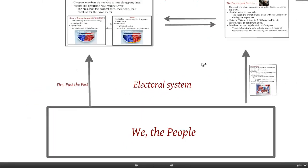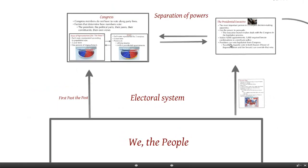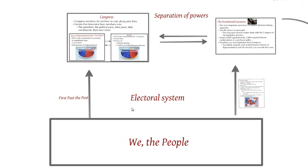Moving on to the electoral system and the relationship between Congress and the President: the people vote directly for the House of Representatives and for the Senate, and also for the President. They use the first-past-the-post system, just like in Britain, so whoever gains the plurality of votes wins the seat in the Senate or House of Representatives.